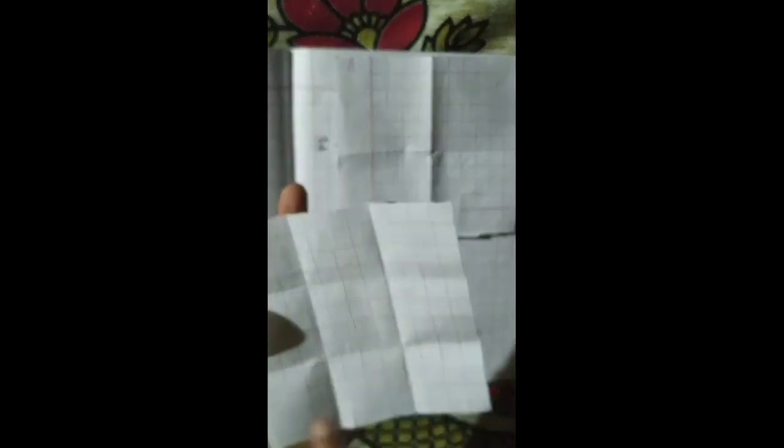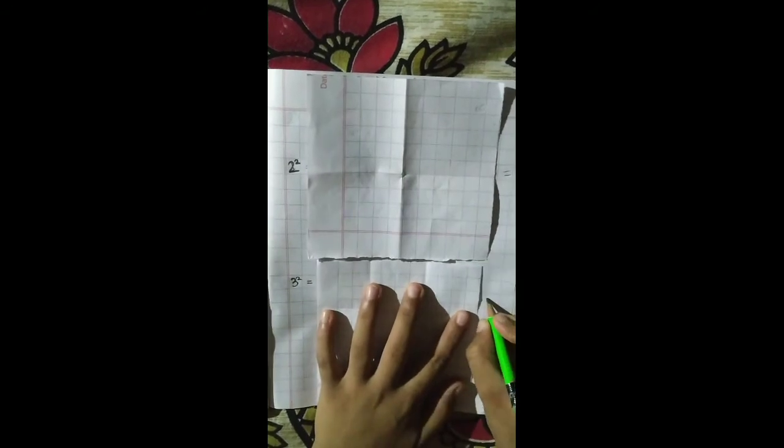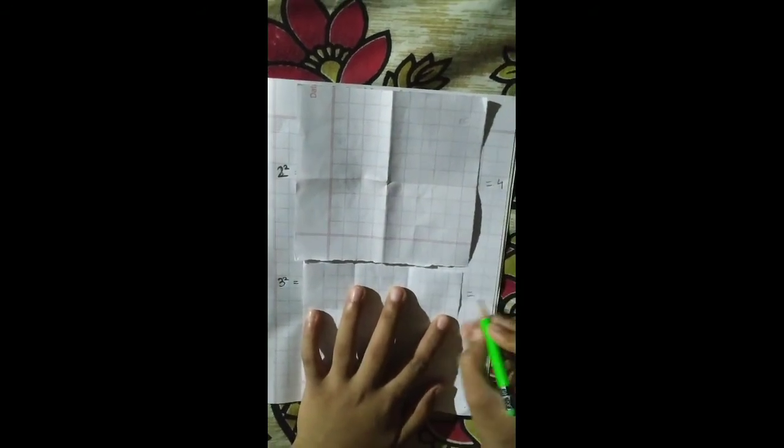Now we will unfold this. So here we can see that there are 9 squares. 1, 2, 3, 4, 5, 6, 7, 8, and 9. So this tells that the square of 3 is 9.